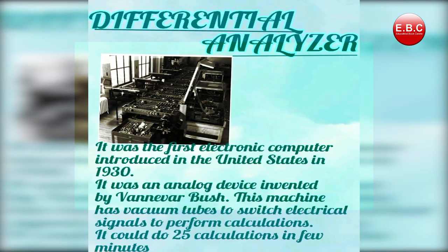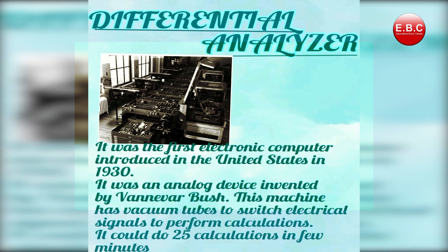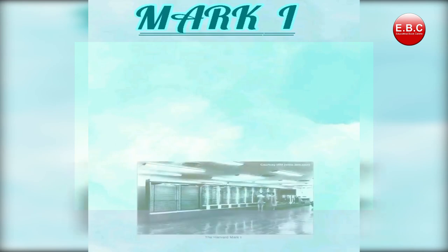Next is the Differential Analyzer. It was the first electronic computer introduced in the United States in 1930. It was an analog device invented by Vannevar Bush. This machine used vacuum tubes to switch electrical signals to perform calculations. It could do 25 calculations in a few minutes. Yah 1930 mein United States mein present kiya gaya first electronic computer tha. Calculations karne ke liye machine mein vacuum tubes use kiye gaye the aur yeh few minutes mein 25 calculations kar sakta tha.